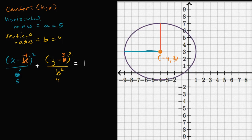So we can rewrite this as, we can rewrite this as x minus negative four, and we can simplify that in a second, x minus negative four squared over five squared, over our horizontal radius squared, so it's going to be 25.